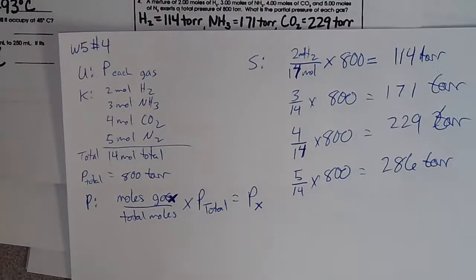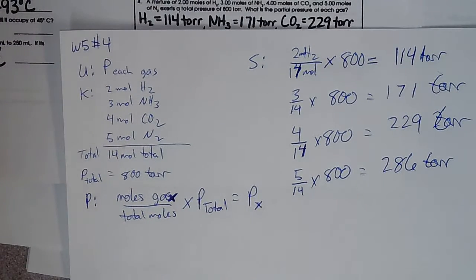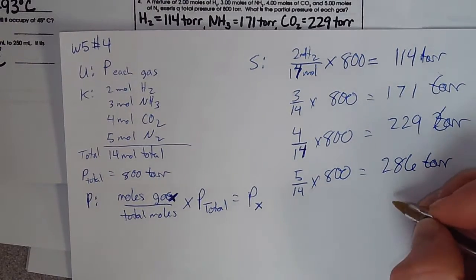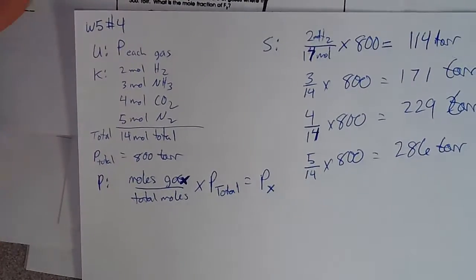And just to check ourselves, we could add those up to make sure they add up to 800. And they do add up to 800, so it checks out. All right, so that's how that one works.